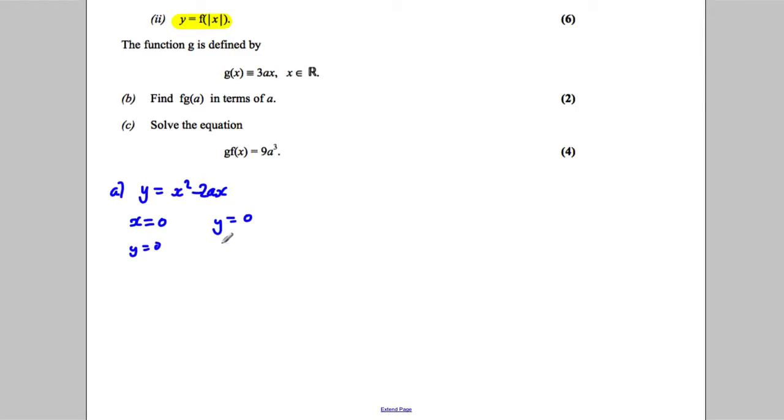You would solve 0 = x² - 2ax. You could factorise the x like that. So x = 0, which is what we had before, but also x is going to be equal to 2a.